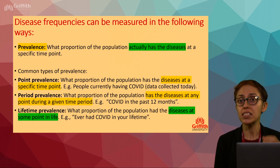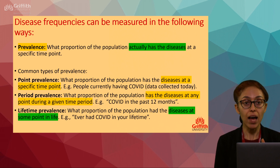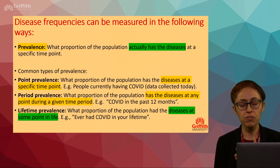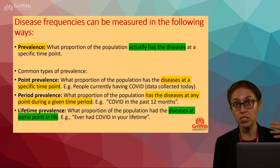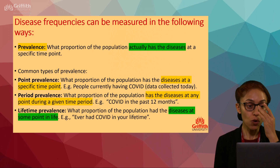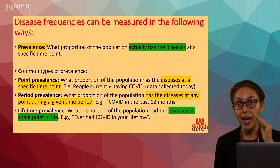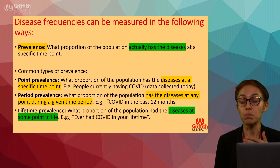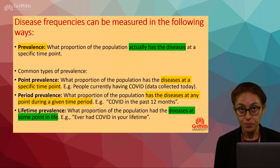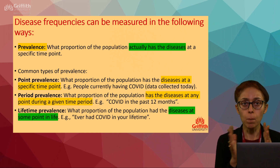In simple layman's terms, prevalence means the population already has the disease condition. For example, people who have had diabetes for the past 5, 10, or 15 years — they already have the disease. The definition is: what proportion of the population actually has the disease at a specific given point in time.